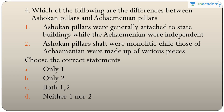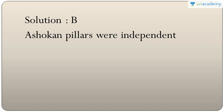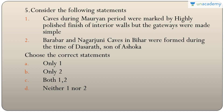Question four: differences between Ashokan pillars and Achaemenian pillars. Ashokan pillars were independent, not attached to state buildings, while Achaemenian pillars were mostly attached to state buildings — so statement one is incorrect. Ashokan pillar shafts were monolithic, while Achaemenian pillars were made of various pieces — this is true. The answer is only two.